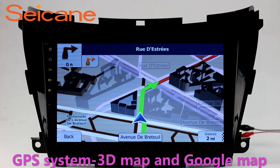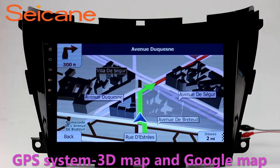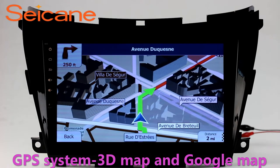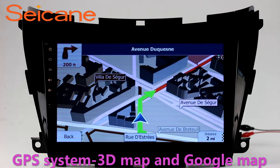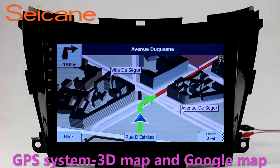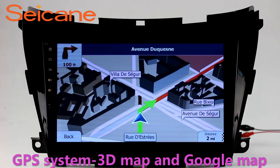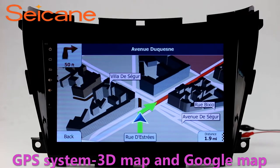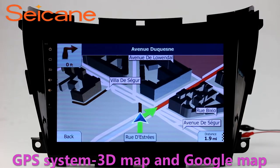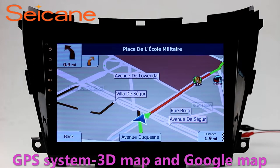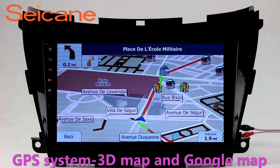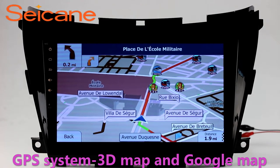GPS. Go to the main menu and open the GPS system. The 3D navigation map shows you accurate GPS locations and route information. It also supports Google Maps. You will never get lost with this function.